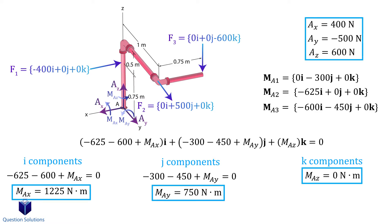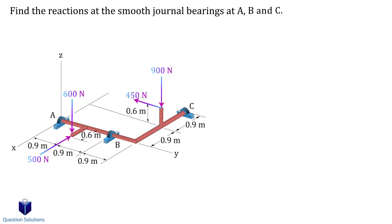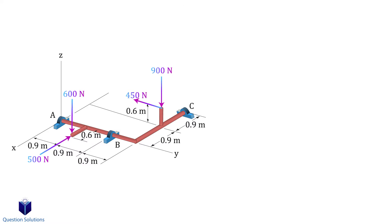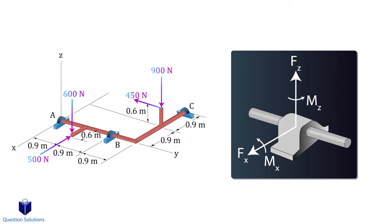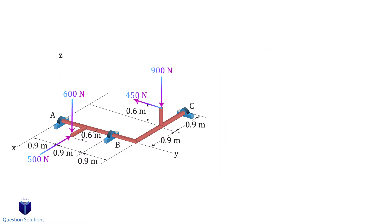In this question there are three smooth journal bearings at A, B, and C, and we need to figure out the reactions. Normally smooth journal bearings have two reaction forces perpendicular to the shaft and two couple moments. However, the couple moments are usually not applied if the object is supported at other places — which is the case here with three supports. So each smooth journal bearing will have two reactions perpendicular to the shaft. At A we have reactions in the x and z directions; at B the same two reactions; at C a reaction in the y direction and the z direction.